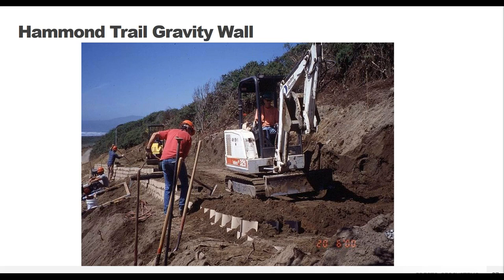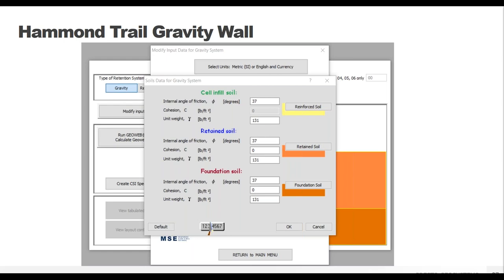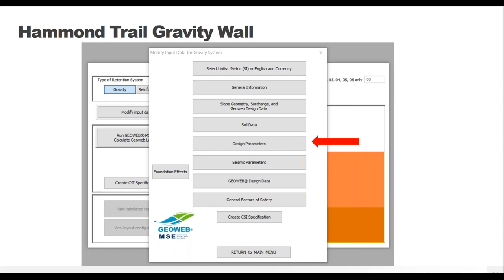Back to our case study area, a bit further along in construction. We have the cell infill soil which goes directly into the GeoWeb cells - this goes into all of the cells no matter the panel length between three and seven. Then we have our retained soil, the area behind the GeoWeb panels, which includes the soil in our back slope area. Finally, the foundation soil - in this case the soil making up the toe slope. This study is pretty easy since it was the same sandy soil everywhere including in the cell infill, so all soil properties are the same.